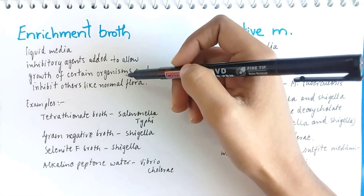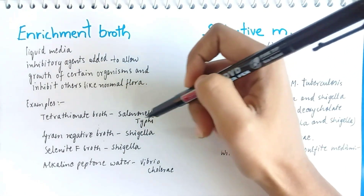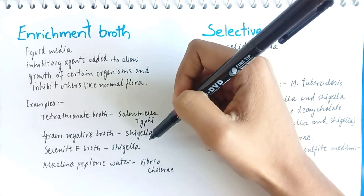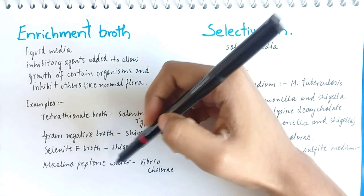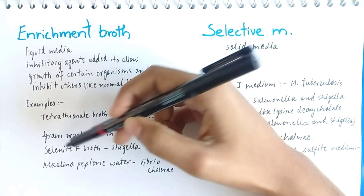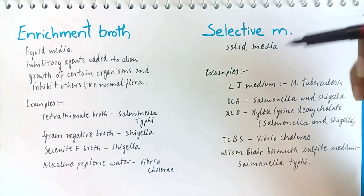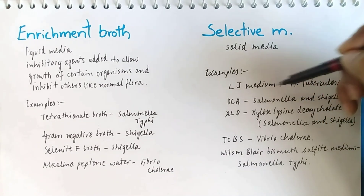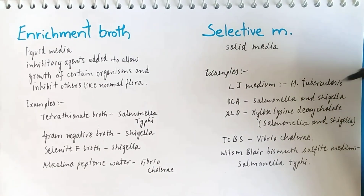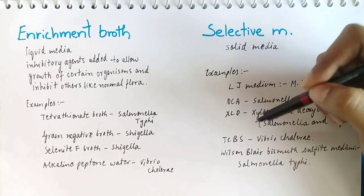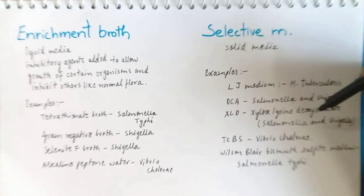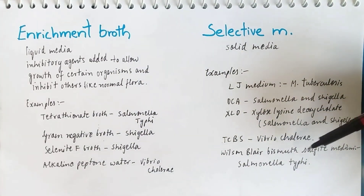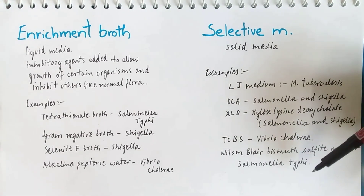Examples of enrichment broth include tetrathionate broth for culture of Salmonella typhi, gram-negative broth for culture of Shigella, alkaline peptone water for Vibrio cholerae, and selenite F broth for Shigella. Examples of selective media are Lowenstein-Jensen medium for Mycobacterium tuberculosis, DCA and XLD for Salmonella and Shigella, TCBS for Vibrio cholerae, and Wilson Blair bismuth sulfide medium for Salmonella typhi.